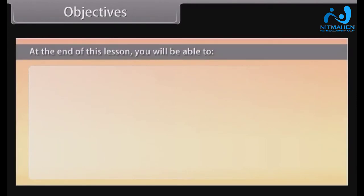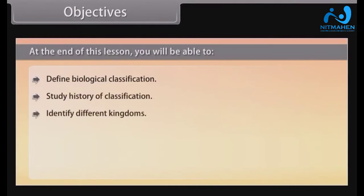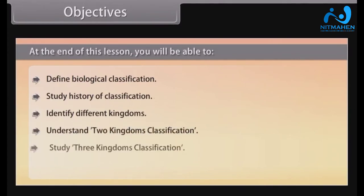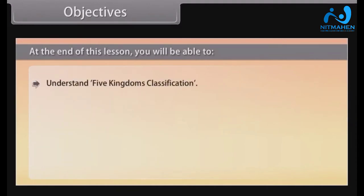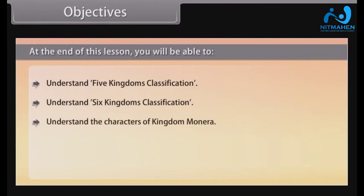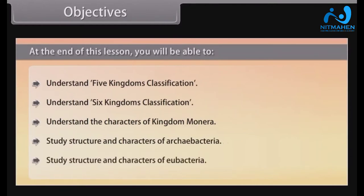Objectives. At the end of this lesson, you will be able to: define biological classification; study the history of classification; identify different kingdoms; understand two kingdoms classification; study three kingdoms classification; know about four kingdoms classification; understand five kingdoms classification; understand six kingdoms classification; understand the characters of kingdom Monera; study structure and characters of Archaebacteria; and study structure and characters of Eubacteria.